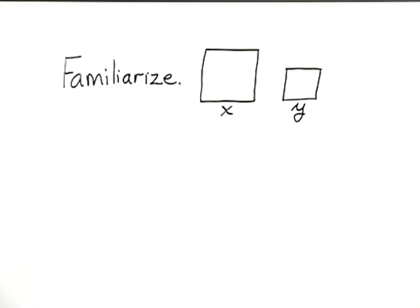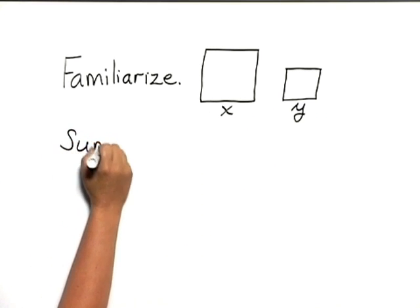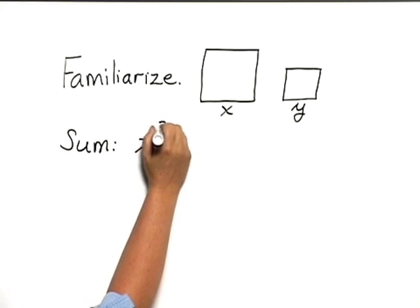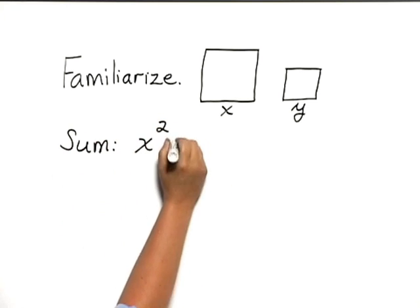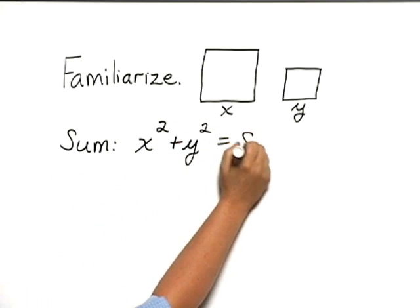Now, we're told that the sum of their areas is 8. So we can translate that into x squared, which is the area of the first square, plus y squared, which is the area of the second square, equals 8.